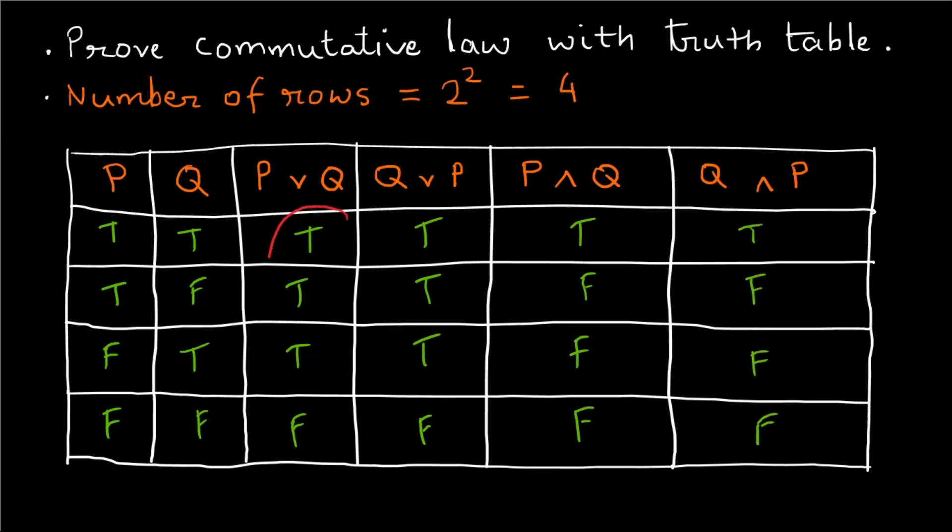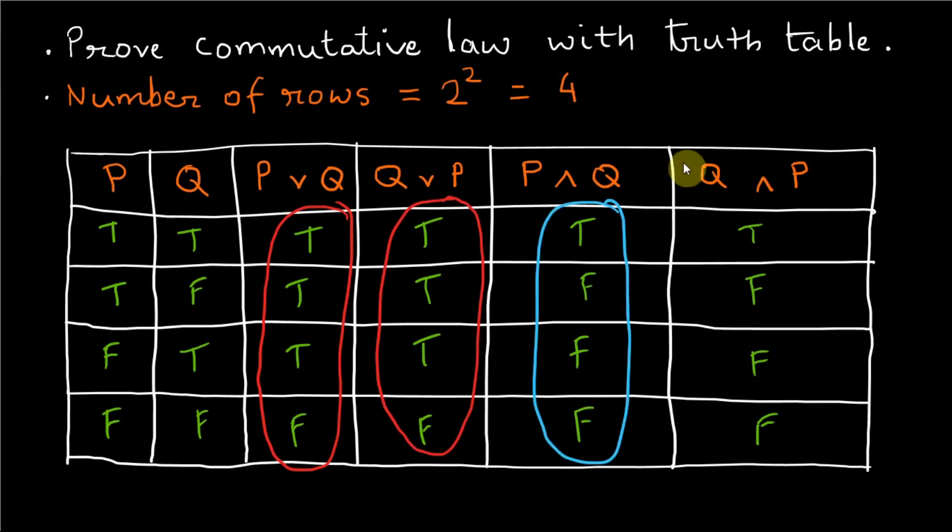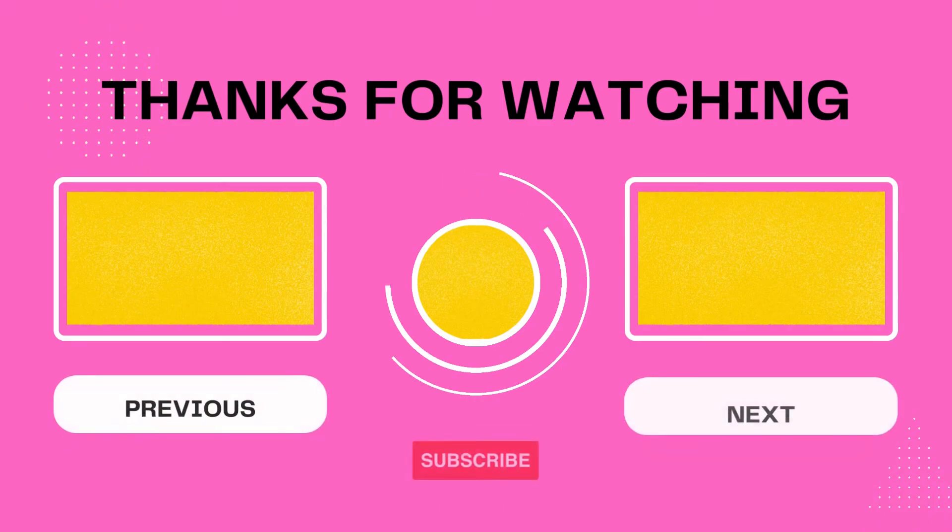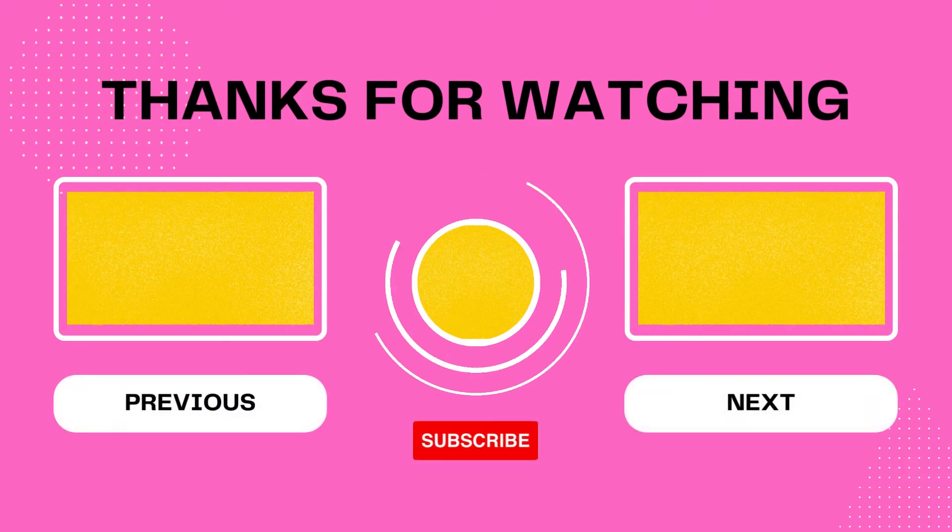The column P or Q and column Q or P are same. Similarly column P and Q and column Q and P are same. Therefore we proved that the commutative laws are logical equivalences.